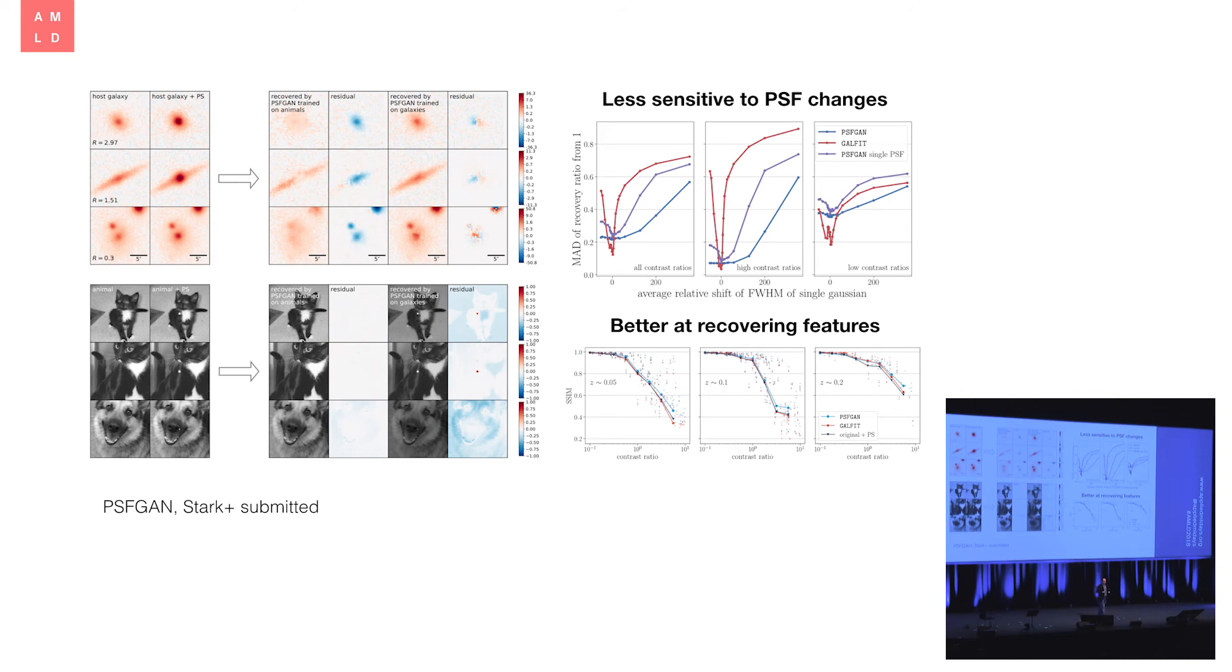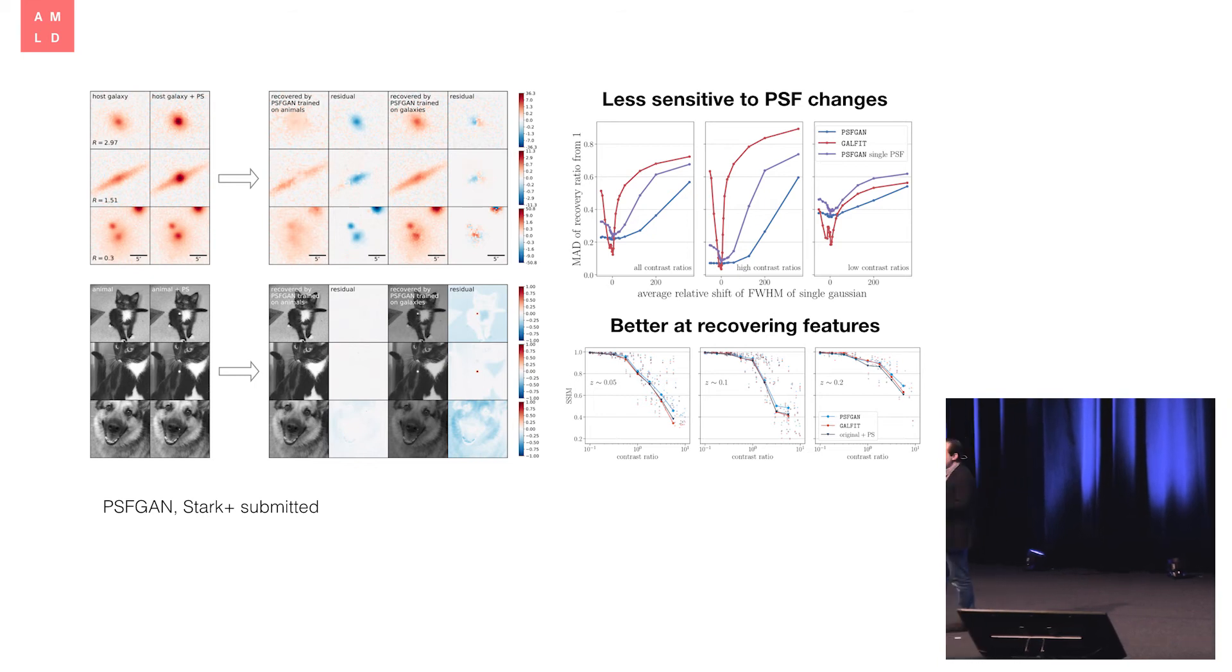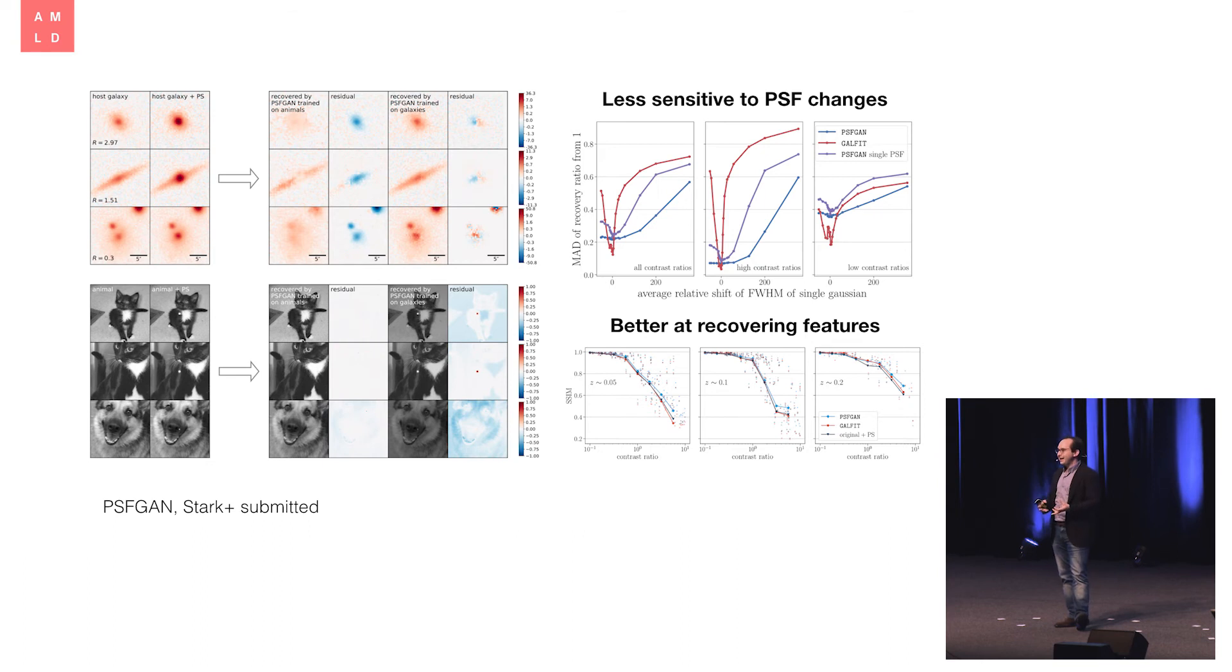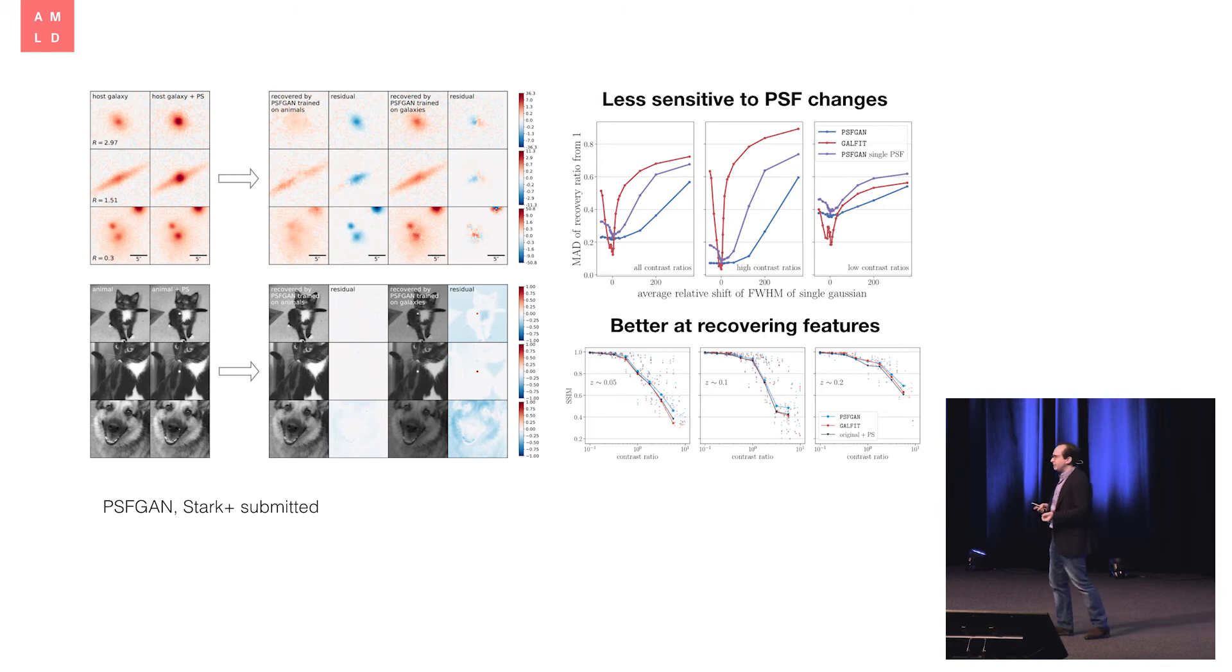We did tests showing the GAN is not only better at recovering the underlying galaxy and the quasar itself, it's also far more stable. These parametric fitting tools that astronomers consider state-of-the-art are incredibly sensitive. They're limited by knowledge of the telescope details and the model of the underlying galaxy. To demonstrate our point source subtracting GAN is far more flexible, we changed the shape of the point source. It doesn't really care.